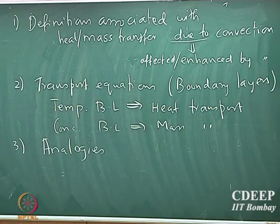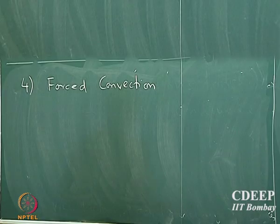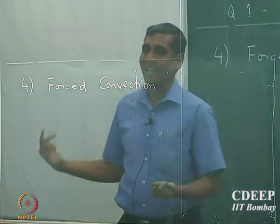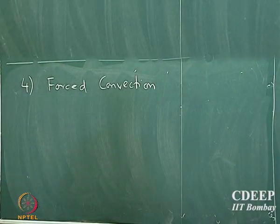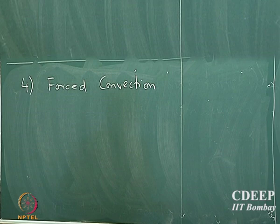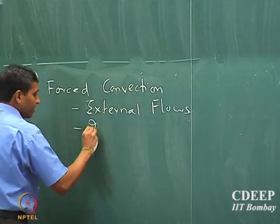The fourth topic, which is really the bulk of it, covers two types of convective effects. One is called forced convection. Suppose you have a pipe where the fluid is actually pumped in — that is a driven flow where the motion of the fluid particles is due to an external pump. That is called forced convection, and the enhancement of heat transport and mass transport in this situation will be covered in the forced convection topic. We will look at two aspects: external flows and internal flows.